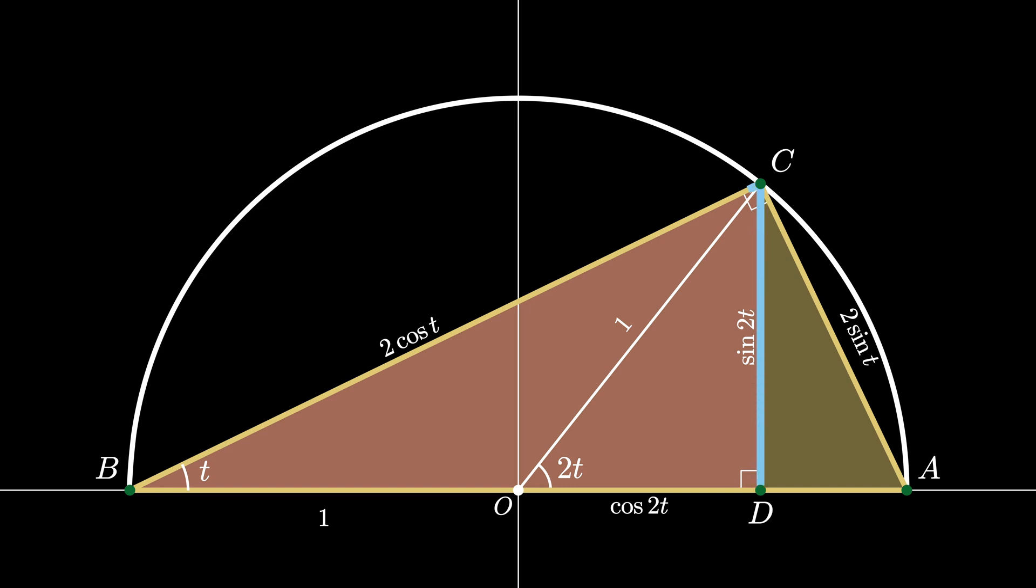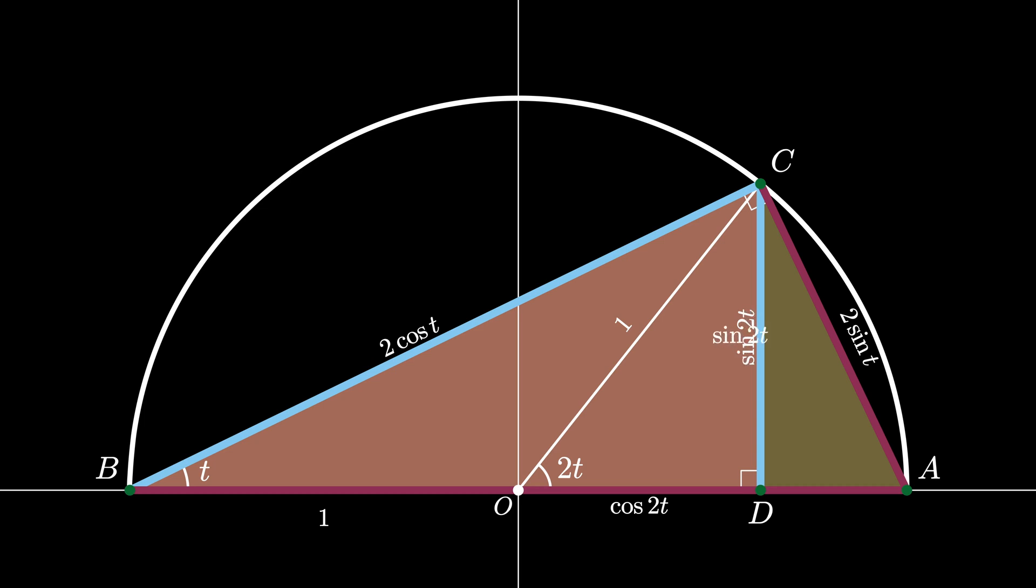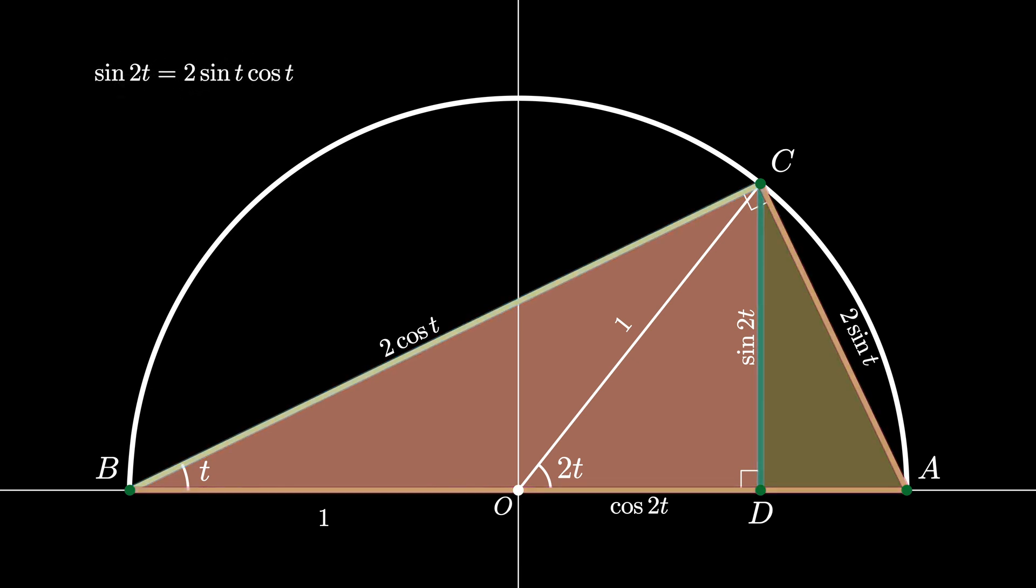Using similarity we know that the ratios of the short leg to the hypotenuse in the two triangles are equal. From this we can conclude that the sine of 2t divided by 2 times the cosine of t equals 2 times the sine of t divided by 2. The twos cancel on the right side and we can rearrange this equation so that it reads sine of 2t equals 2 times the sine of t times the cosine of t.